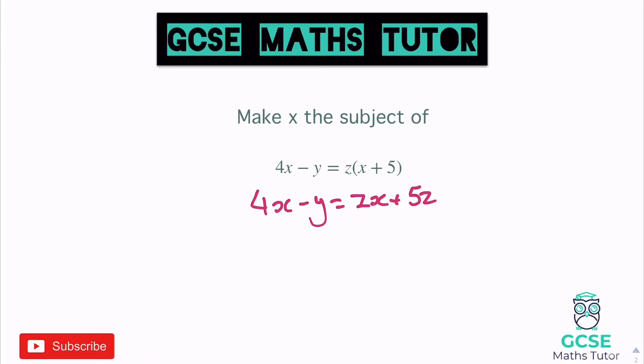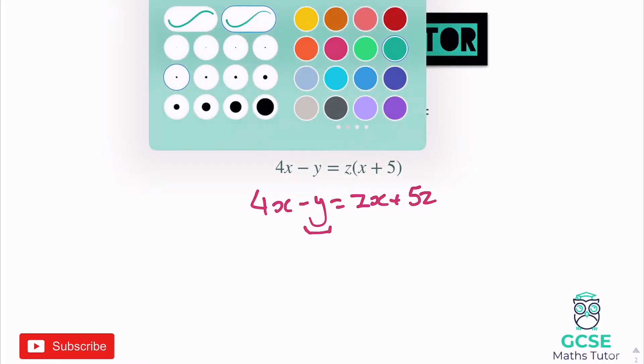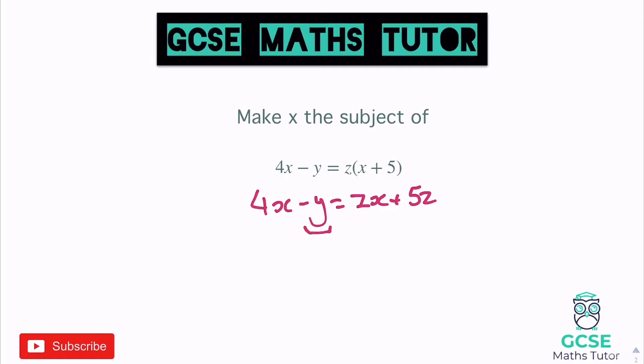Now we just need to get the x's on the same side. This time I'm going to move the x's to the left. I'm just looking at this minus y here and thinking, well, if I add that over it's going to get rid of that negative symbol. So I'm going to move the zx to the left-hand side — so minus zx — and that now equals 5z.